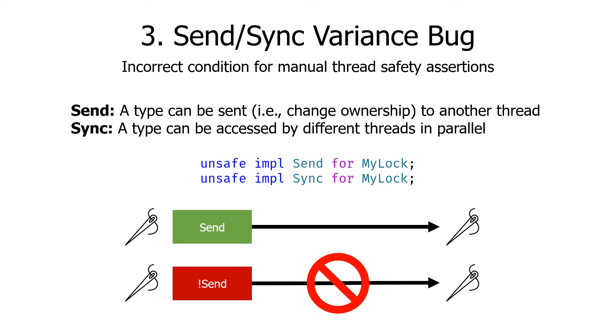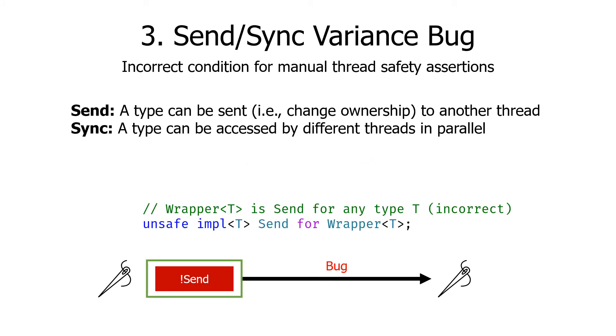The Rust compiler automatically implements them for simple types. But complex types such as synchronization primitives like locks require manual assertions of send-sync properties with unsafe impl. A send-sync variance bug happens when a generic type specifies incorrect type bounds on type parameters. If the wrapper type does not specify any condition on the inner type T when implementing Send trait, such definition allows non-thread safe types to go across the thread boundary through the wrapper type and is considered a bug.